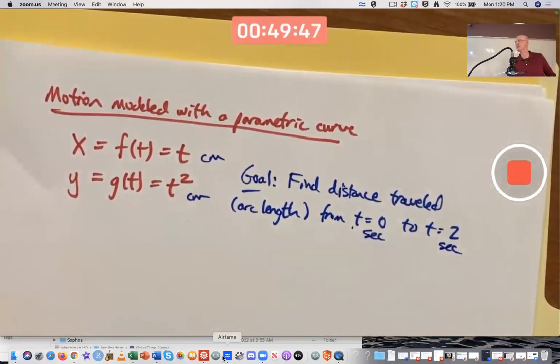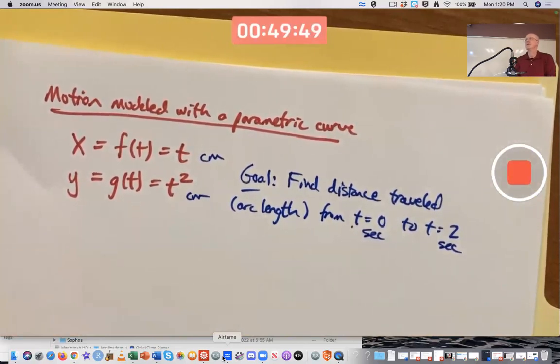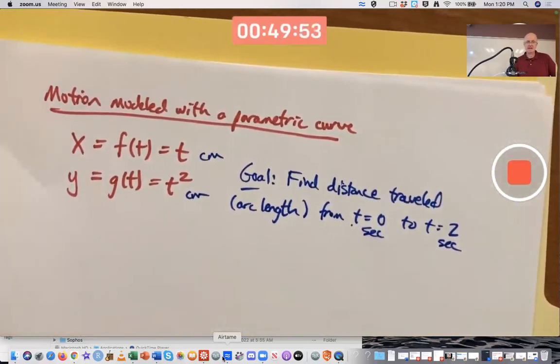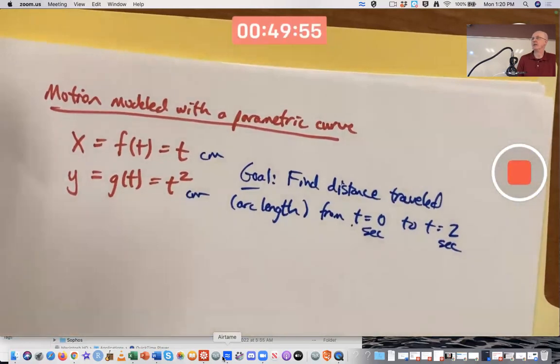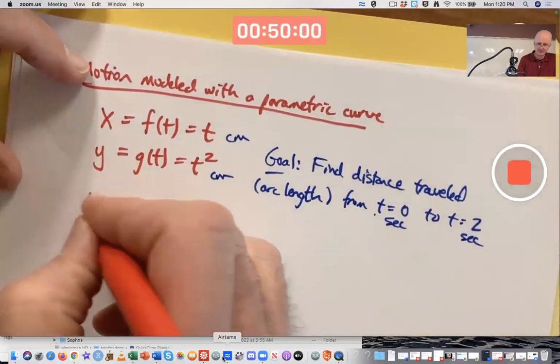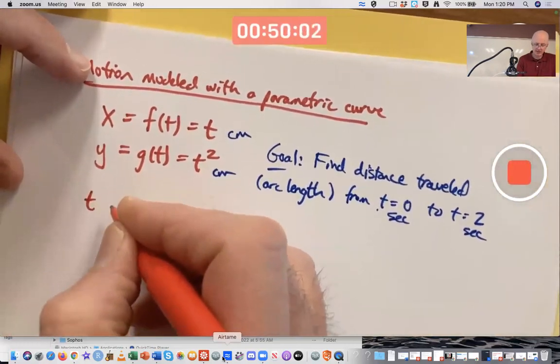How do you find the distance traveled? It's not so easy because the motion is not along a straight line. It's a curve. In fact, we can even plot the curve by plotting points.